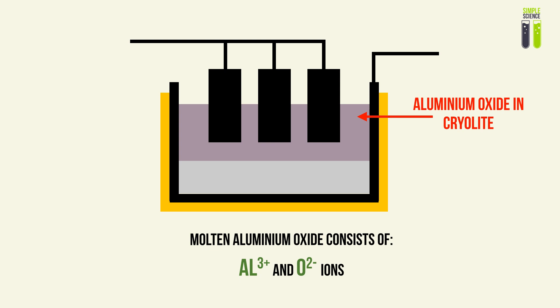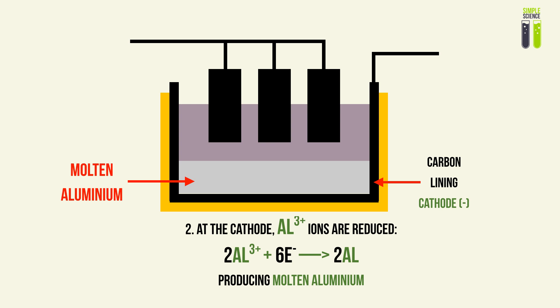At the cathode, which is a source of electrons where reduction occurs, positive ions gain electrons to reduce to a neutral state. The Al³⁺ ion in our mixture gains electrons: two Al³⁺ ions gain six electrons in total to be reduced to two aluminium atoms. These aluminium atoms come out as molten aluminium at the cathode — that is the main product we want.